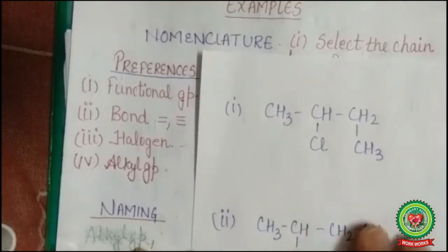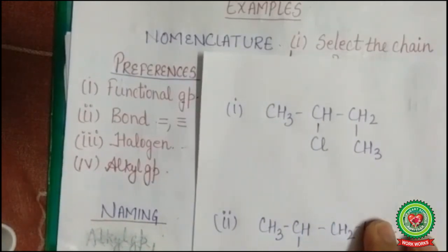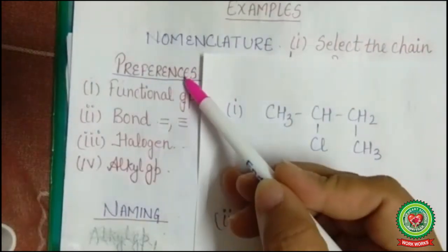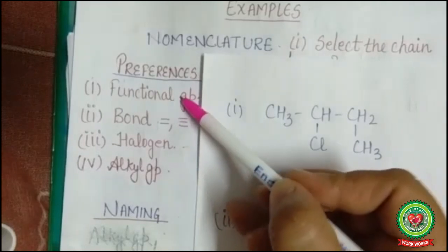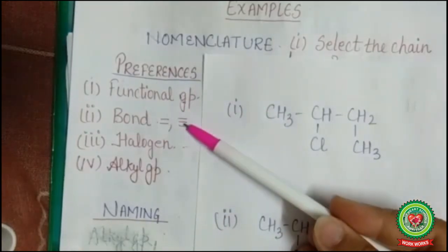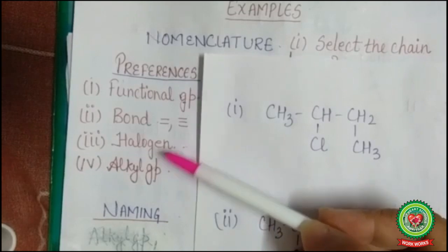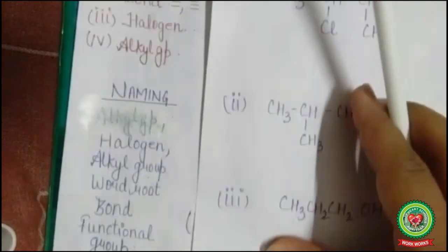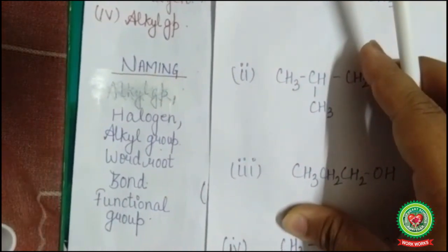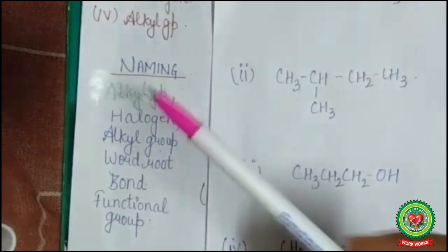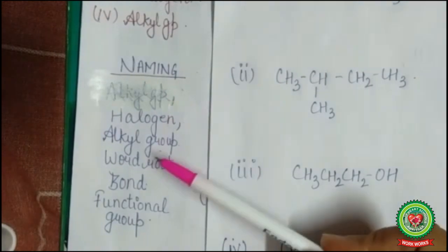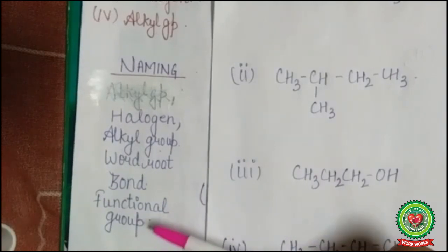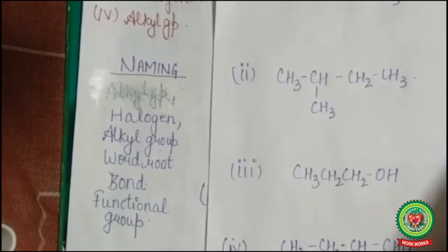We are recalling the rules again. The shortcut is: first, select the longest chain. Then preferences — first preference is functional group, second is bond, third is halogen, and fourth is alkyl group. For naming the compound: write halogen, then alkyl group, then word root, then bond, then functional group.